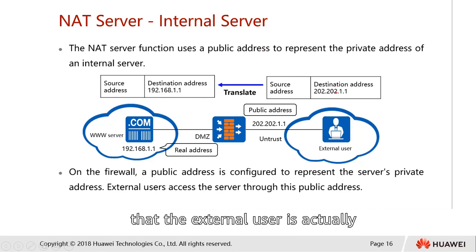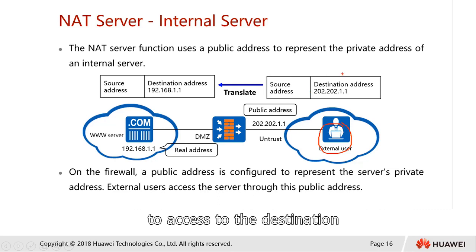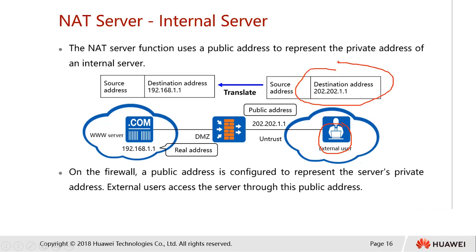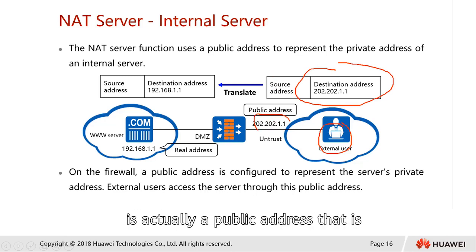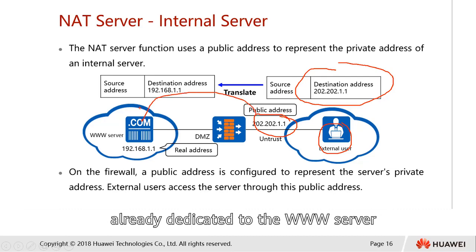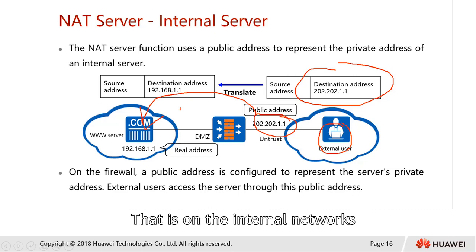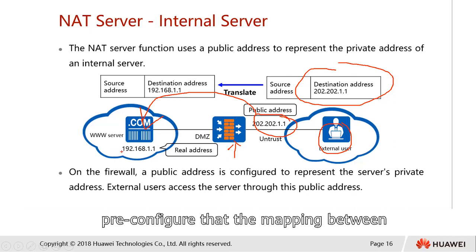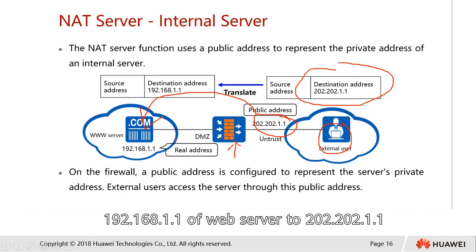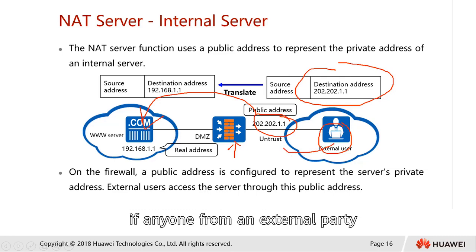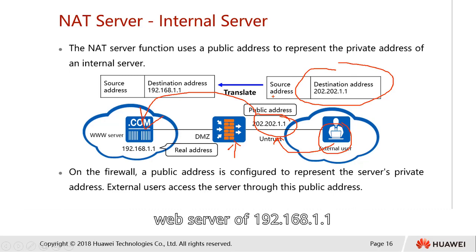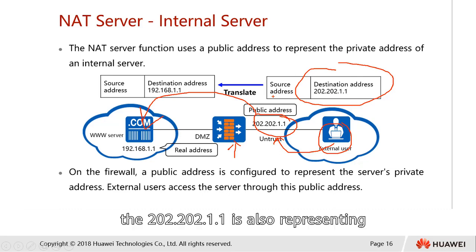As you can see, the external user is using his own source address to access the destination address 202.202.1.1. This public address is dedicated for the web server on the internal network at 192.168.1.1. This means that in our firewall, we have to pre-configure the mapping between 192.168.1.1 and 202.202.1.1, so that anyone accessing the public address will be directed to the internal web server.